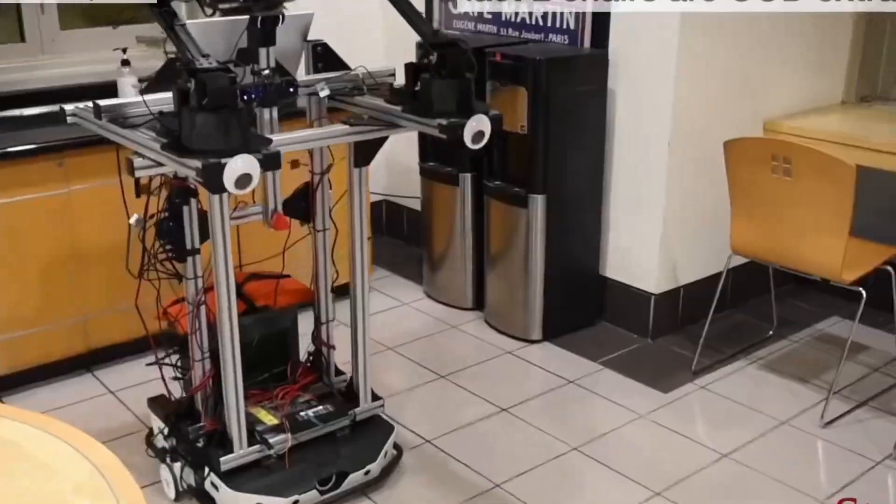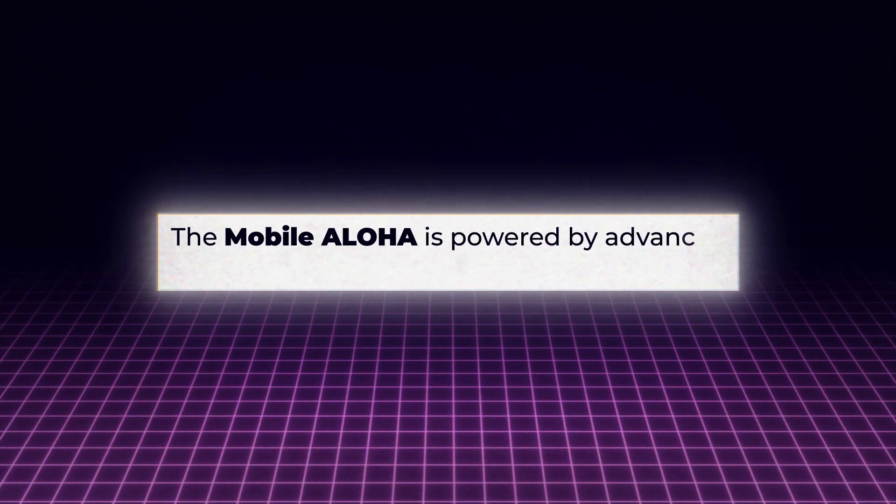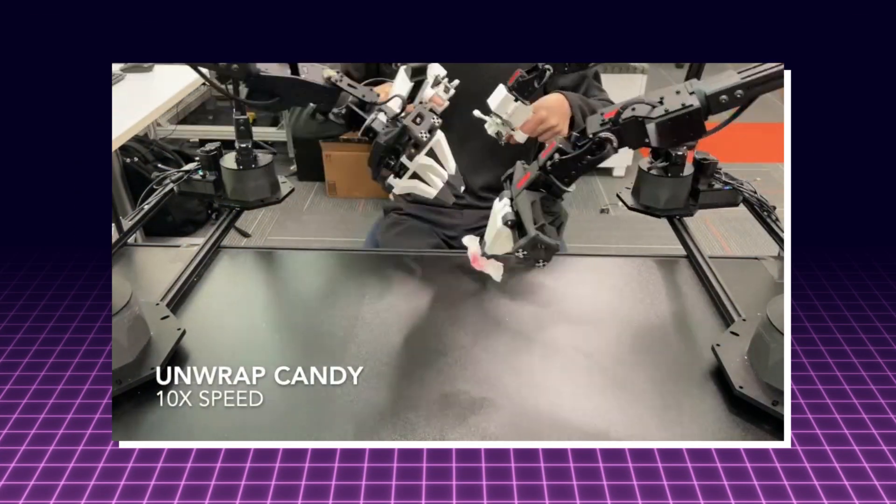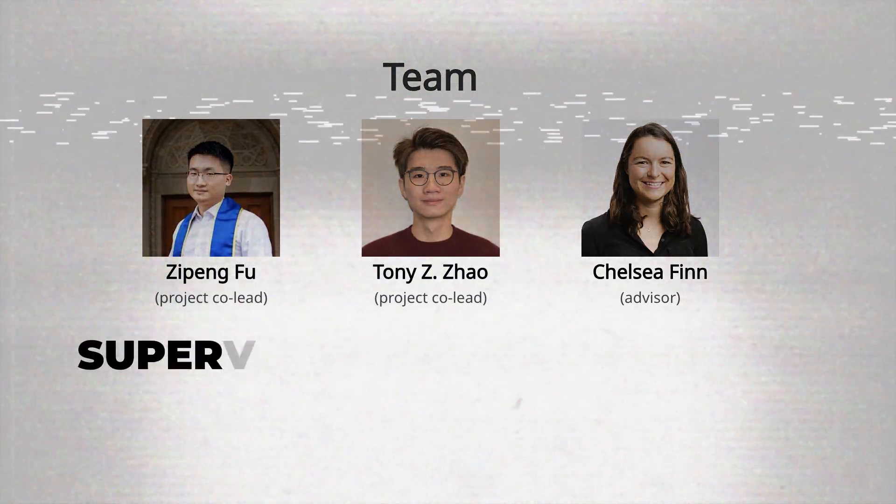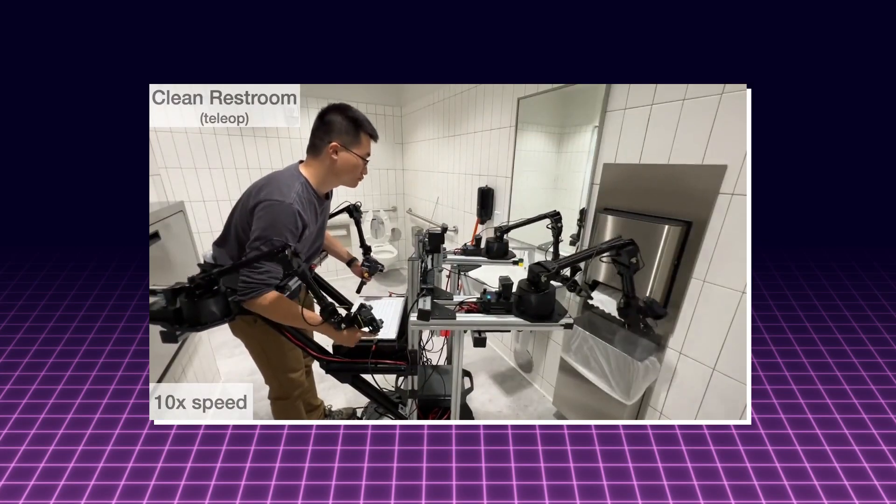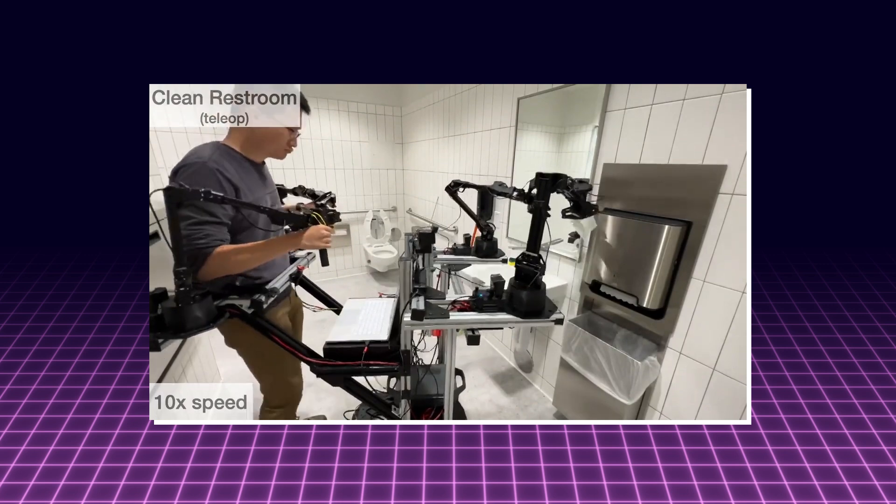But it's not just about the physical design. The Mobile Aloha is powered by advanced AI and machine learning algorithms. These allow the robot to learn from human demonstrations and carry out tasks independently. The team at Stanford has developed a method called supervised behavior cloning for Mobile Aloha. This involves training the robot using the data collected from human demonstrations.